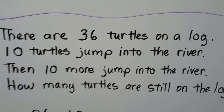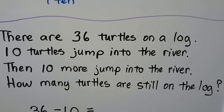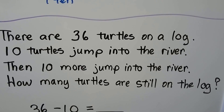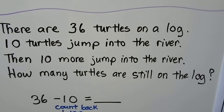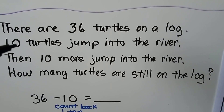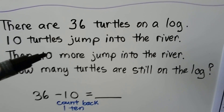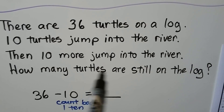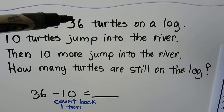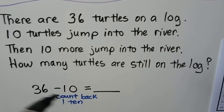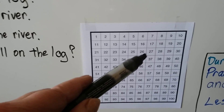Let's try another word problem: there are 36 turtles on a log. Ten turtles jump into the river, then ten more jump into the river. How many turtles are still on the log? Be careful — you might see the word 'more' and think it's addition, but both groups are jumping into the river, so we subtract. We start with 36 and count back one ten to 26.